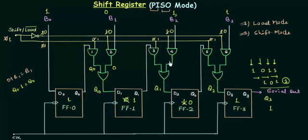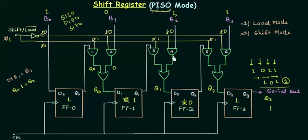This is how the shift register in parallel input serial output mode works. We have already studied the other three modes: serial input serial output, parallel input parallel output, and serial input parallel output, and now parallel input serial output is also complete. Two topics still remain in shift registers — the bidirectional shift register and the universal shift register. In the next presentation we will study the bidirectional shift register.